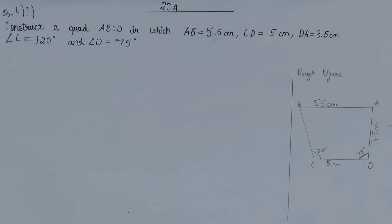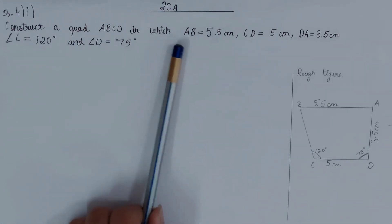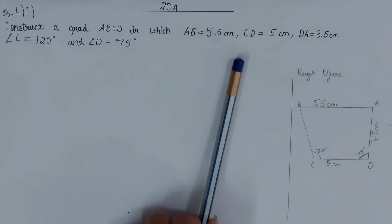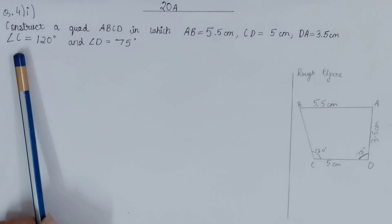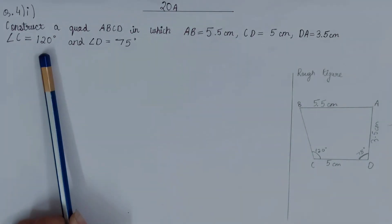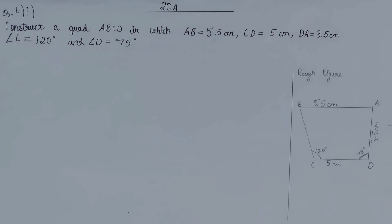Let's see what we have here. It says: construct a quadrilateral ABCD in which AB is 5.5 centimeters, CD is 5 centimeters, DA is 3.5 centimeters, angle C is 120 degrees, and angle D is 75 degrees. So we have three sides and two angles given.